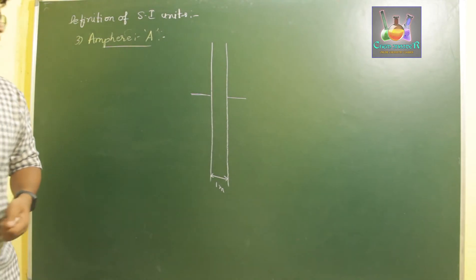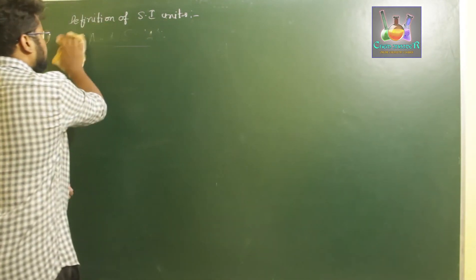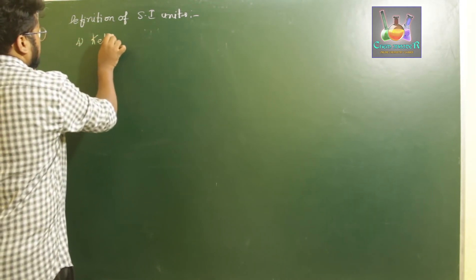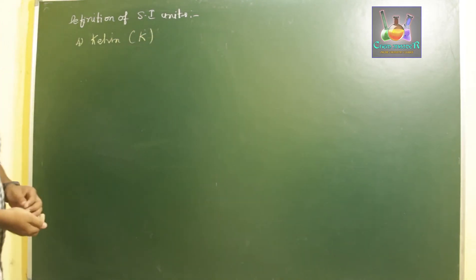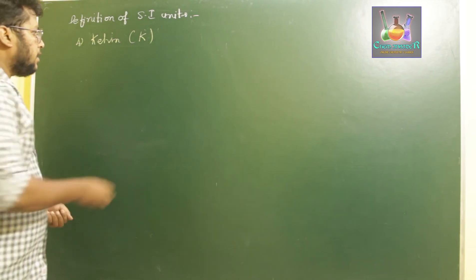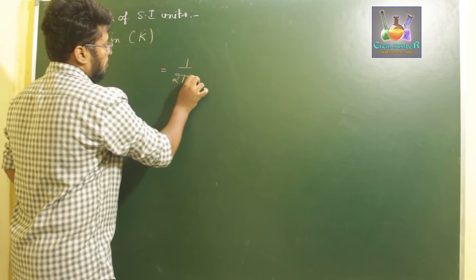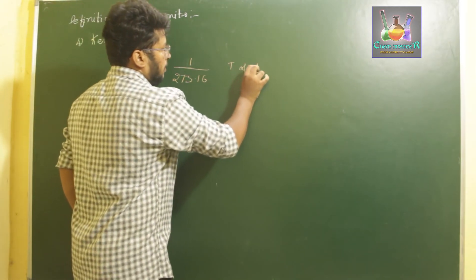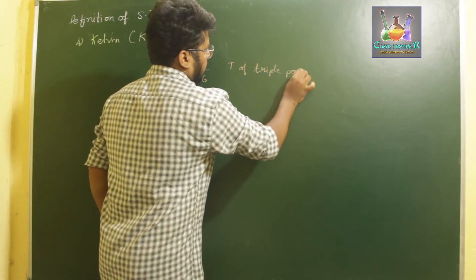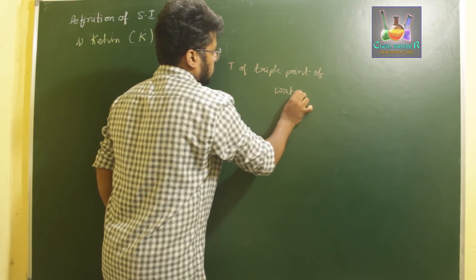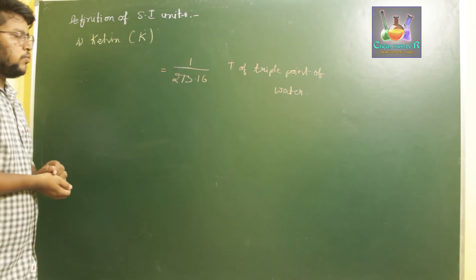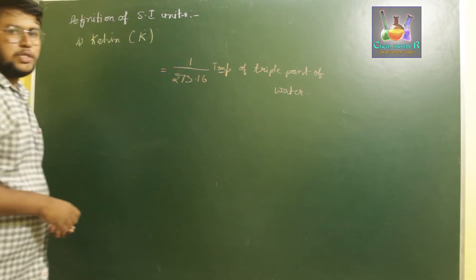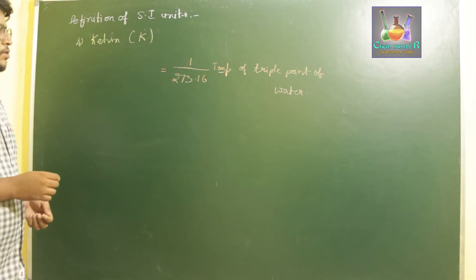Next is the definition of temperature — Kelvin, symbol K. A Kelvin is defined as 1/273.16 times the thermodynamic temperature of the triple point of water.